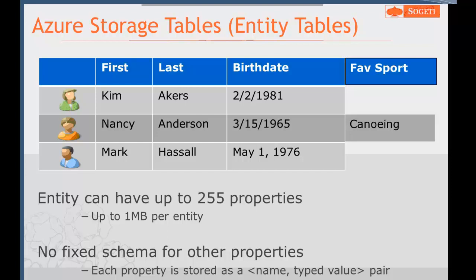Each row or entity in a table can have up to 255 properties with a maximum size of one megabyte. There's no fixed schema — everything is stored in key-value or name-value pairs. The schema is not stored in the table, and we have basic support for general data types we're used to: strings, GUIDs, binaries, and so on.